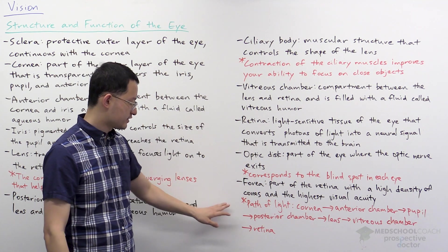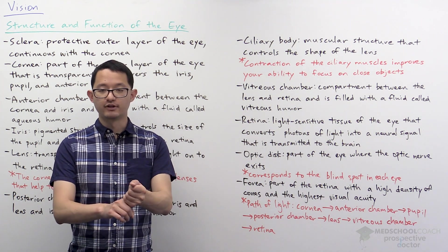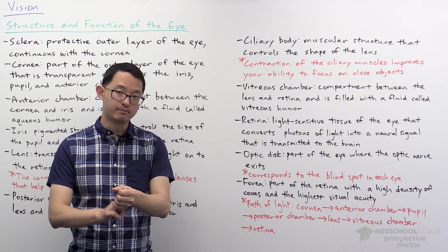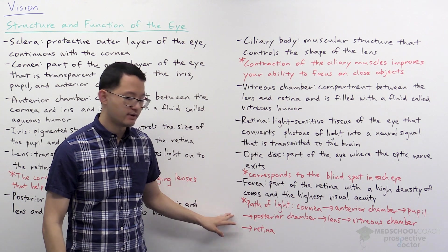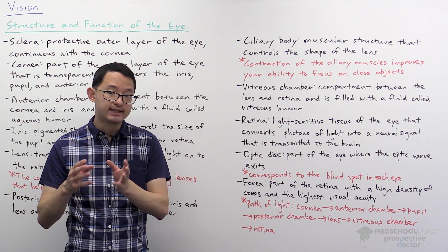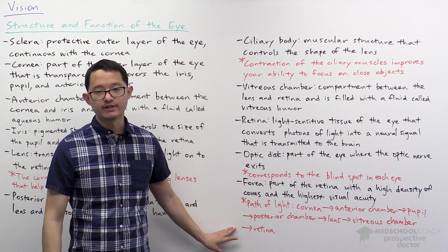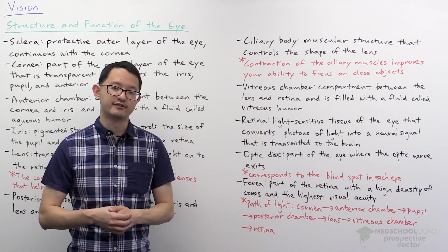So to summarize, the path of light begins by passing through the cornea. It enters the anterior chamber. It passes through the pupil. It continues through the posterior chamber. It is focused by the lens. It passes through the vitreous chamber and it reaches your retina and then converts the light into a neural signal.